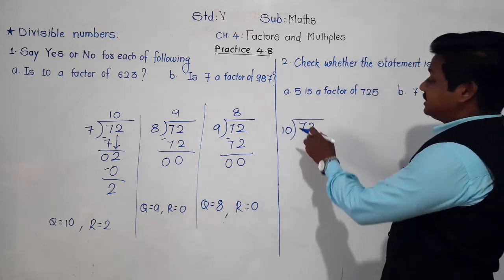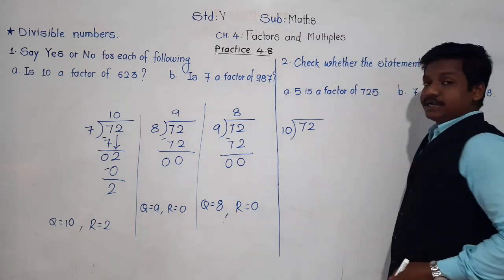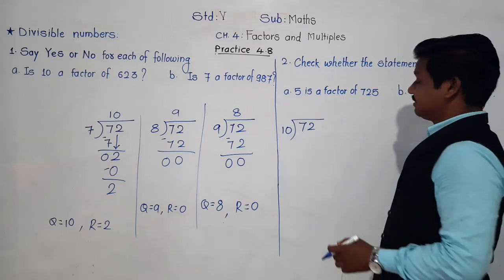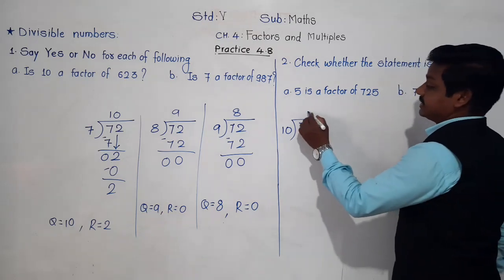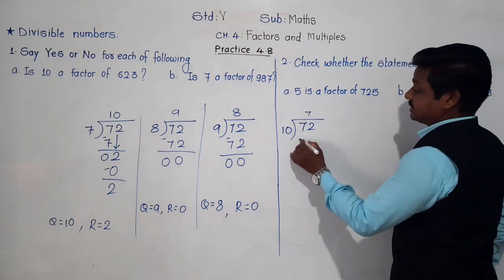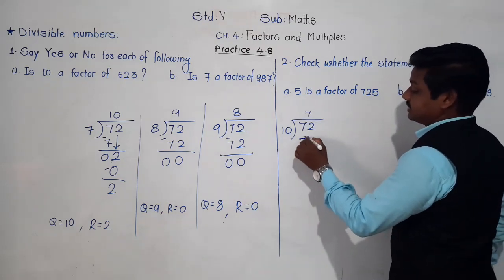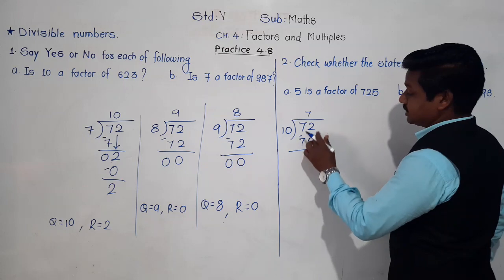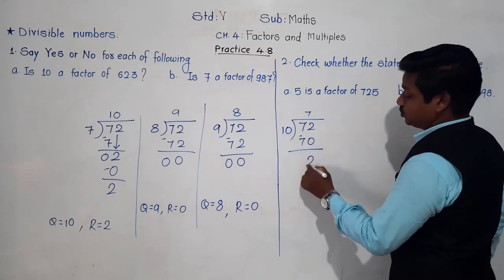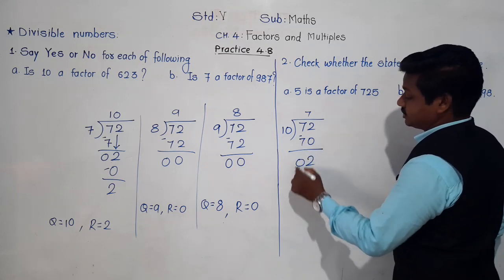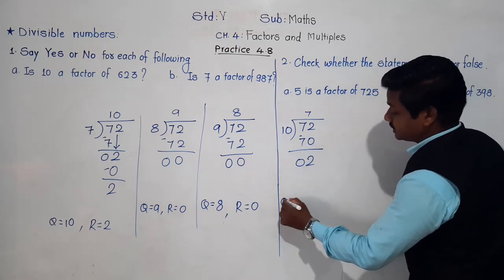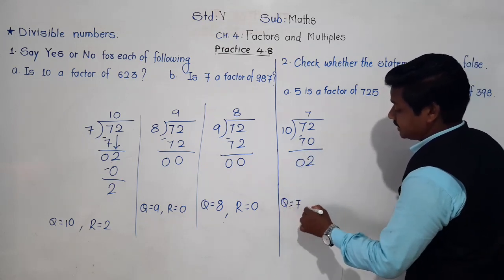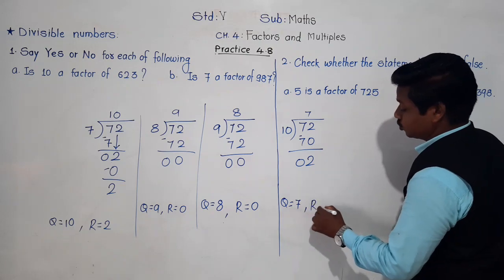And let's divide 72 by 10. 10 sevens are 70. So 2 minus 0 is 2, 7 minus 7 is 0. Here the quotient is 7, but the remainder is 2.